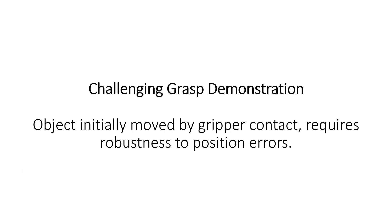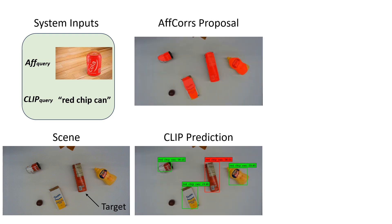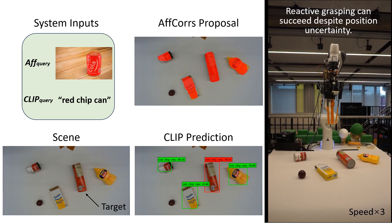Our method is robust to position noise. This grasp demonstrates error compensation. Now, we aim to grasp the red chips can and input a cola bottle as the query. The target is localized and grasping proceeds.